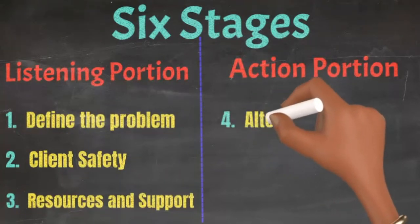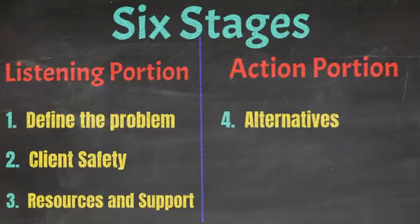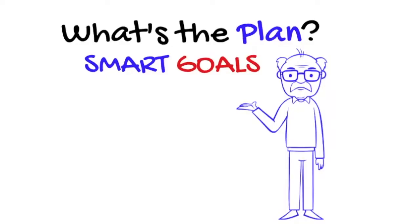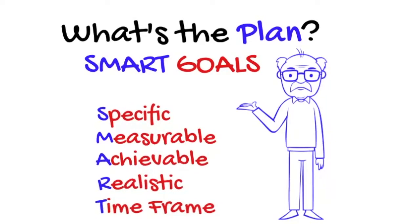When you finish the listening portion after building rapport, you move on to the action portion. The three steps in the action portion begin with examining alternatives — what are some of the other options we can use to move forward in the midst of this crisis? The fifth step, and second step of the action portion, is making plans. You want the client to come up with a concrete, well-defined plan using smart goals. They should be the ones to come up with this plan — you can give ideas, but you want them empowered enough to create it.